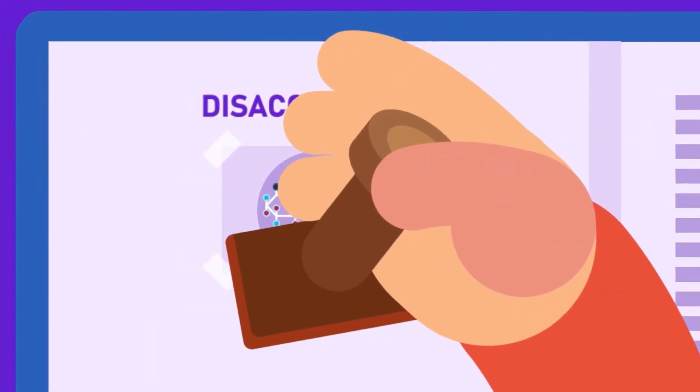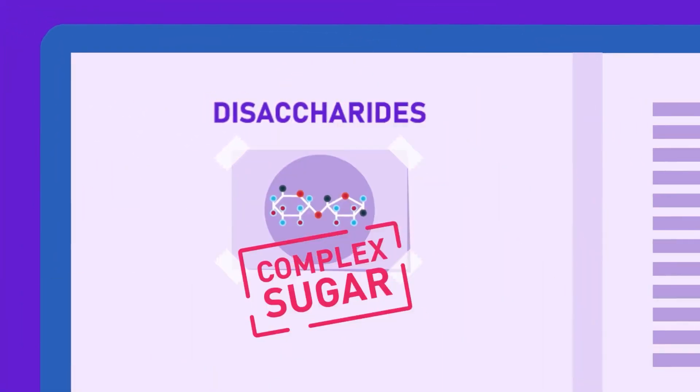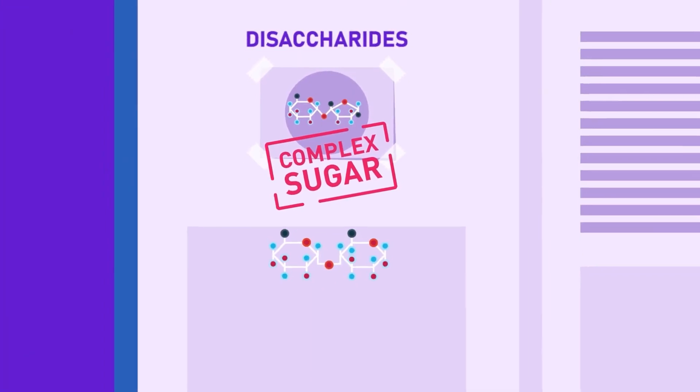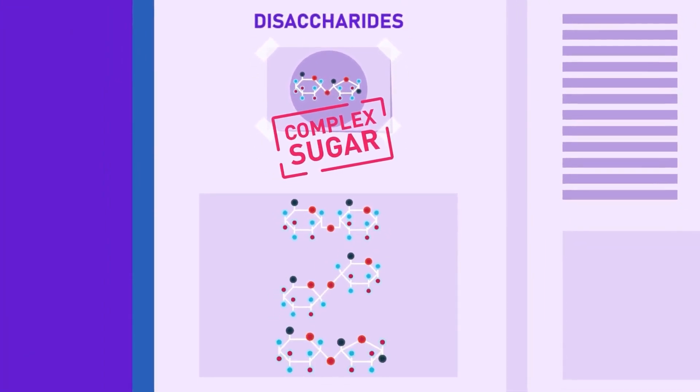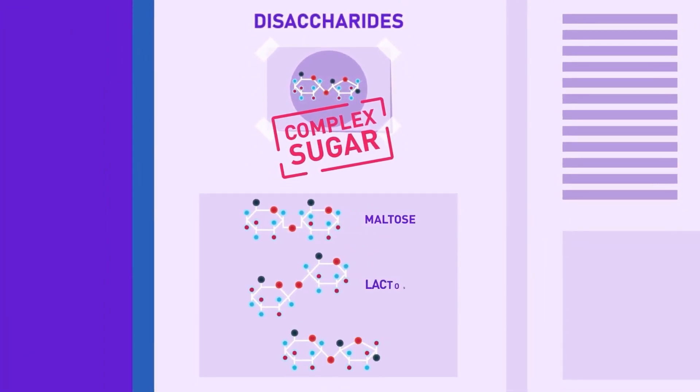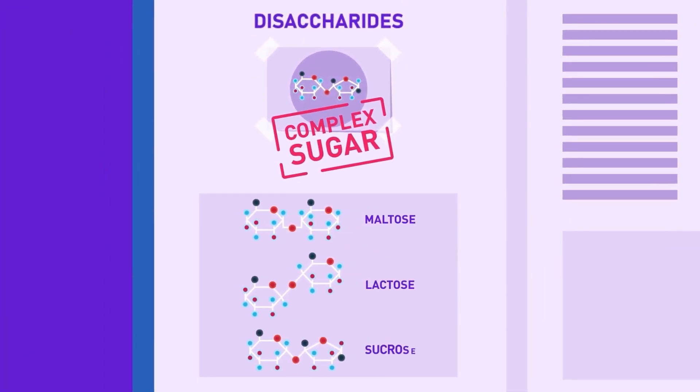Disaccharides are also known as complex sugars, as they have complex chemical compositions. Maltose, lactose and sucrose are their examples.